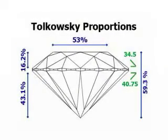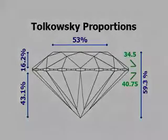Certain angles and proportions are proven to maximize these effects. In 1919, a mathematician named Marcel Tolkowsky was the first to calculate a set of proportions for the round ideal diamond. A diamond cut within these proportions will be more dynamic and more beautiful than one that is not.